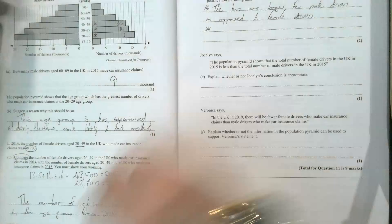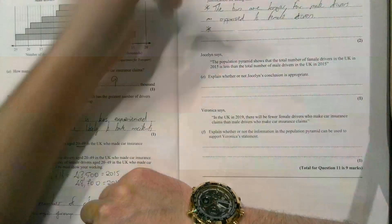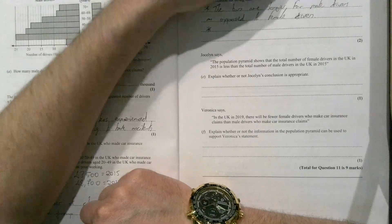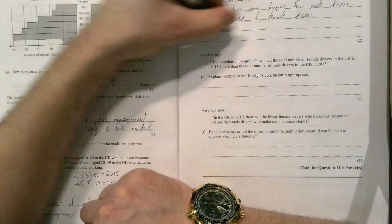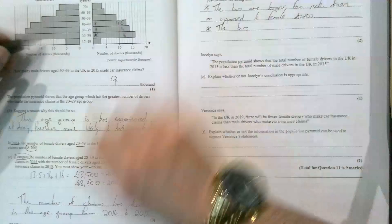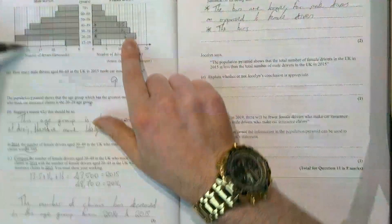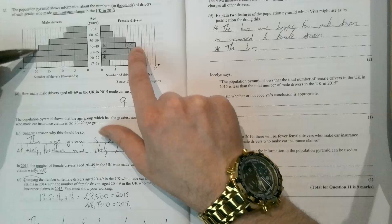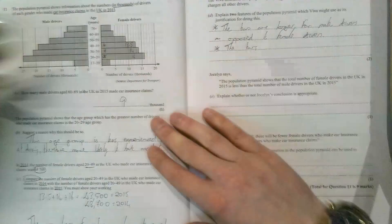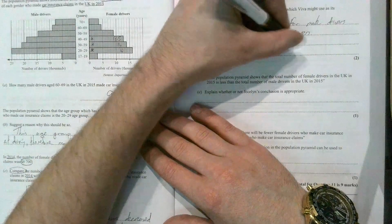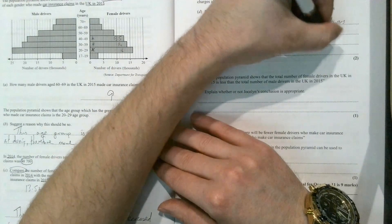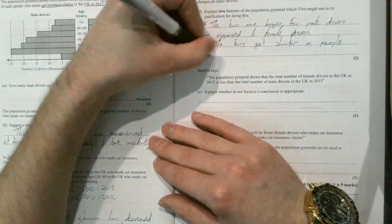And the second point we could say—so it's young male drivers, I've mentioned the male bit—so what we could say then is, notice that as people get older they make less claims. So what we could say is the bars get shorter as people get older.